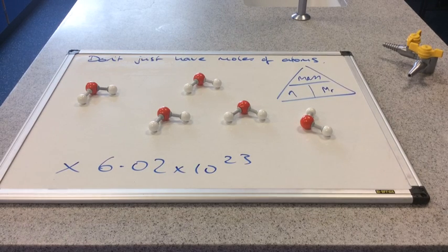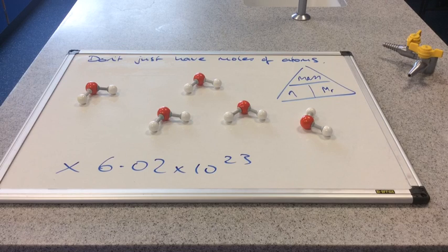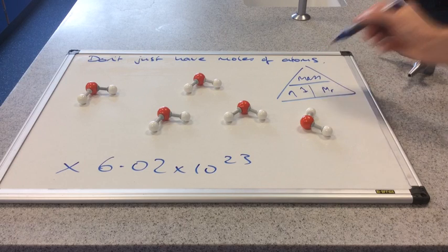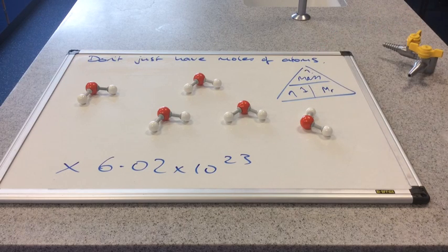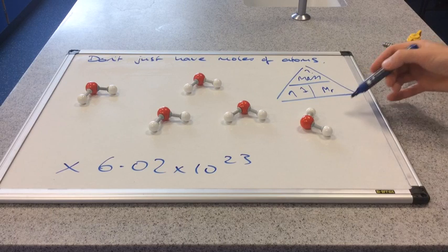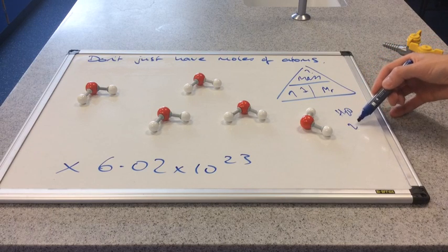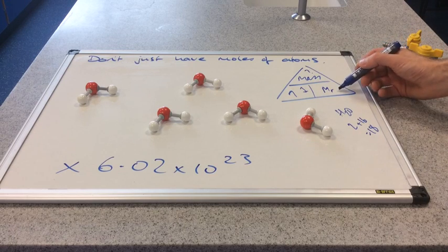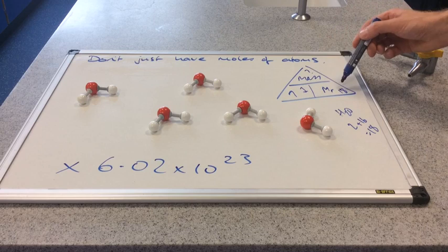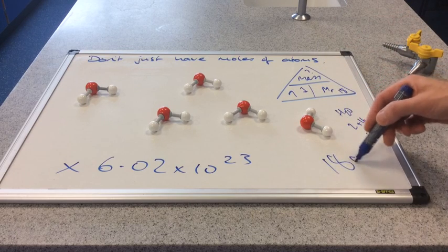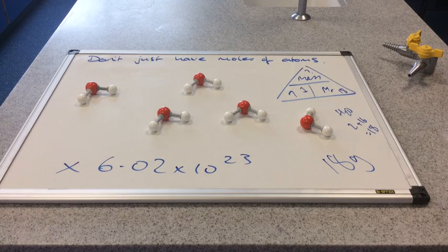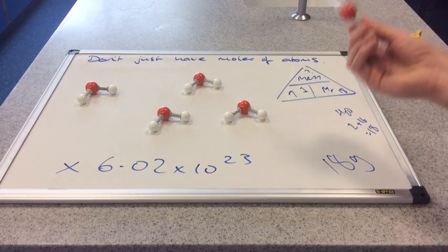So how many grams of water would we need to have a mole of water? So we want one mole of water. That's what we want to work out. How many grams do we need? The MR of water, well H2O, so that's 2 plus 16, that's 18. So if we multiply 1 by 18, we get the mass. So we need 18 grams of water. And that's a mole of water. And inside that beaker of water there would be this many of these molecules.